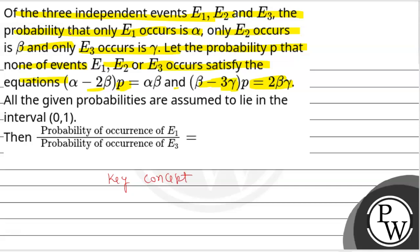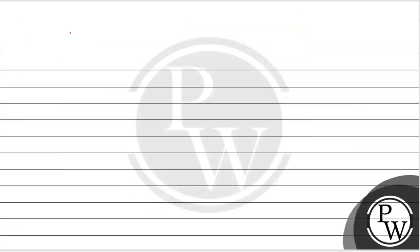The key concept is that if an event occurs with probability P, then it does not occur with probability 1 minus P. We assign: the probability of event E1 as X, the probability of event E2 as Y, and the probability of event E3 as Z.